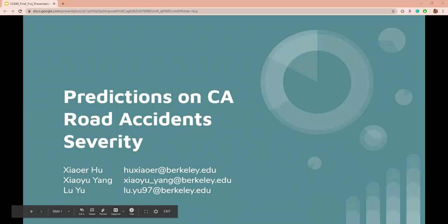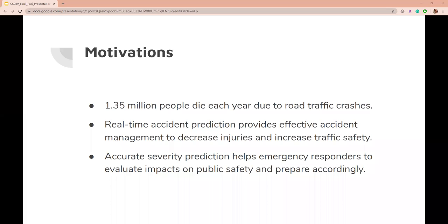Our project is predictions on California road accident severity. Approximately 1.35 million people die each year because of road traffic crashes. It is crucial to predict the severity of accidents. Accurate prediction provides important information for emergency responders to evaluate potential impacts on public safety and prepare accordingly.